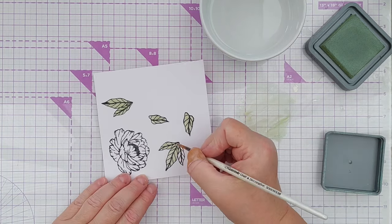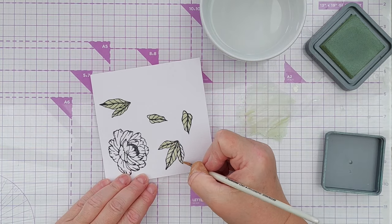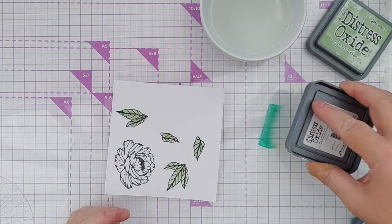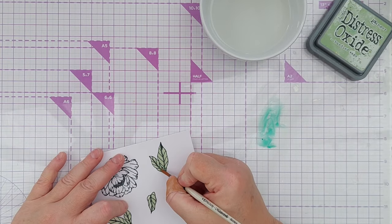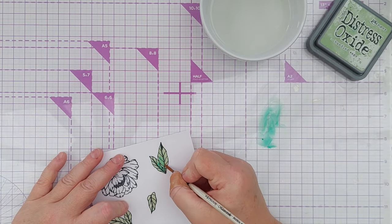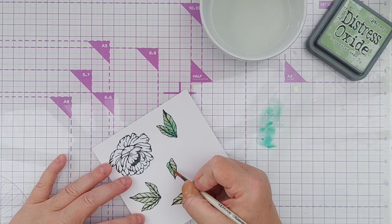I wanted to give my leaves more than just one color of green, so I squished some Pine Needles or it might have been Lucky Clover—it doesn't really matter—it was a darker, brighter green onto my media mat.